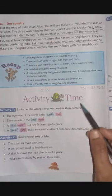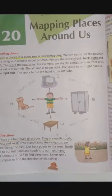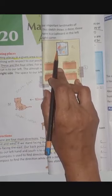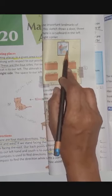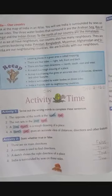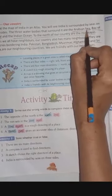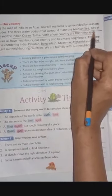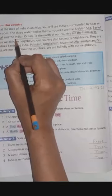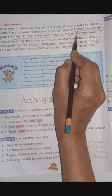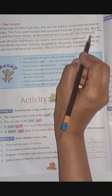जब भारत का मानचित्र देखोगे, जैसे इस classroom में भारत का मानचित्र दिखाया है — तो आपने देखा होगा एक, दो, तीन — तीनों साइड से भारत महासागरों से घिरा हुआ है। Arabian Sea, Bay of Bengal और Indian Ocean — अरब का सागर, बंगाल की खाड़ी और हिंद महासागर। To the north of our country are the Himalayas.